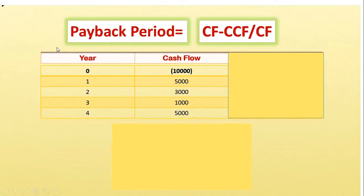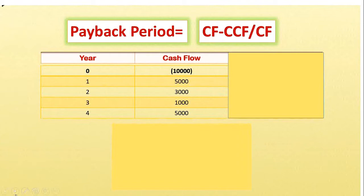PBP or payback period is the time when you will get back the amount you have invested. Suppose you have invested five thousand — you want to know when you will get back that five thousand. To calculate it, there's a formula you see on your screen: payback period equals CF minus CCF divided by CF. CF means cash flow, CCF means cumulative cash flow. This is the standard formula to get the most accurate form.